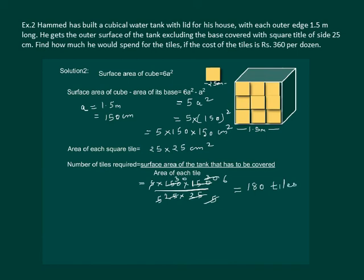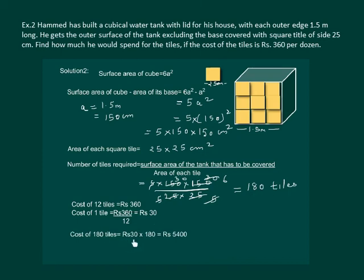It is given that the cost of 1 dozen tiles is Rs. 360, that is the cost of 12 tiles is Rs. 360. The cost of 1 tile is Rs. 360 ÷ 12 = Rs. 30. Then the cost of 180 tiles will be Rs. 30 × 180 = Rs. 5,400.